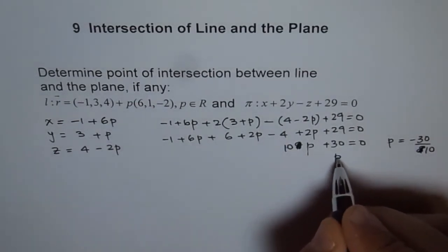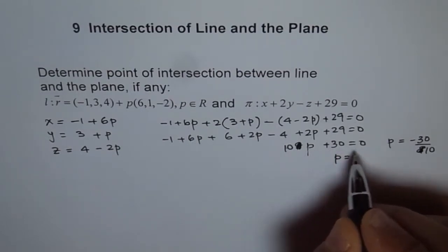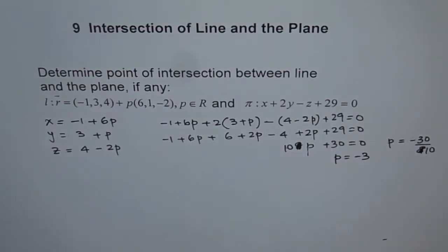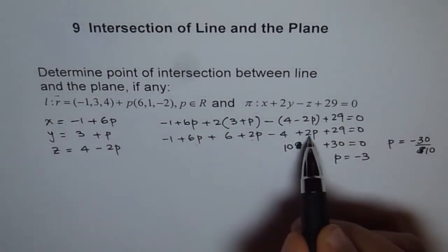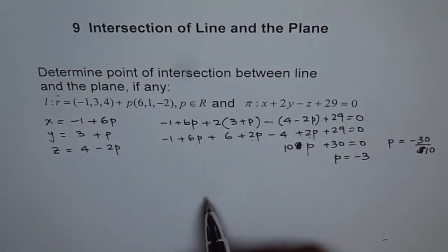So this is 10p for us, so we get p equals minus 3. So p is 6 plus 2, 8 plus 2, 10. So p is minus 3 for us.